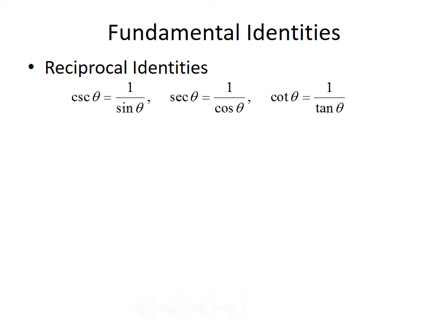Another way to find trigonometric function values is by using some fundamental identities. The first set are the reciprocal identities: cosecant of theta is the reciprocal of sine of theta, secant of theta is the reciprocal of cosine of theta, and cotangent of theta is the reciprocal of tangent of theta. So if you know the values of one, you can find the other using the reciprocal.